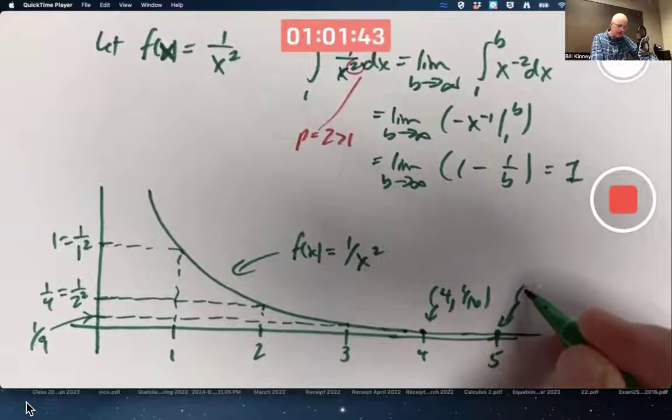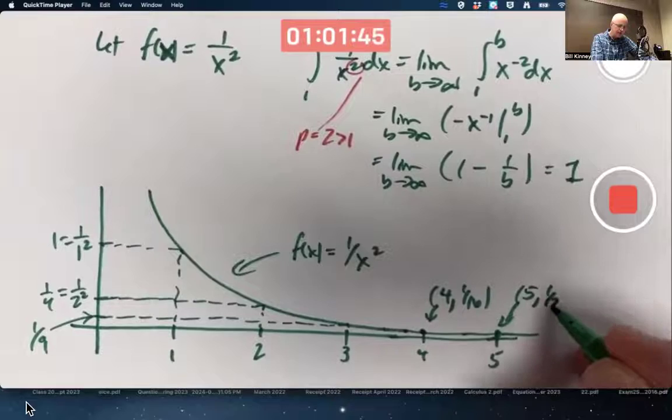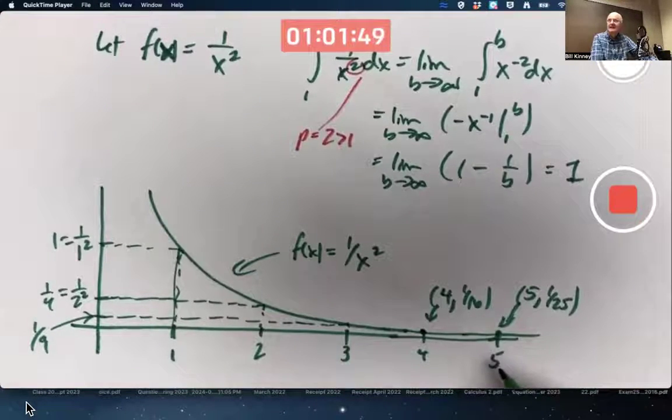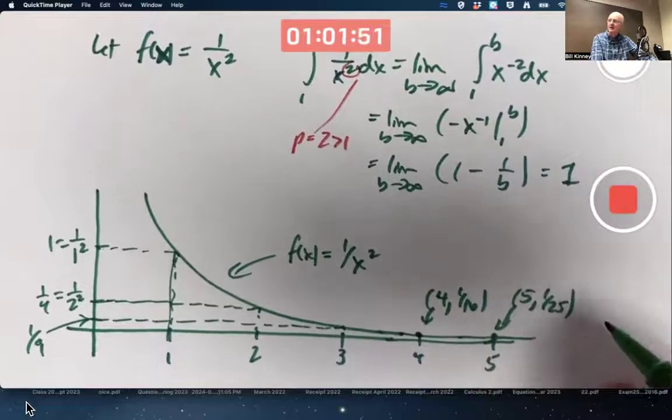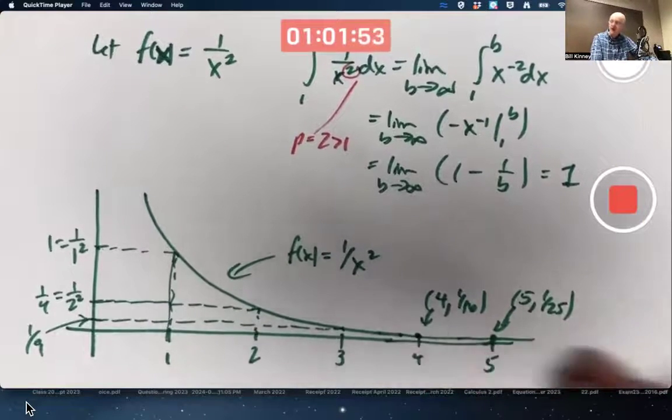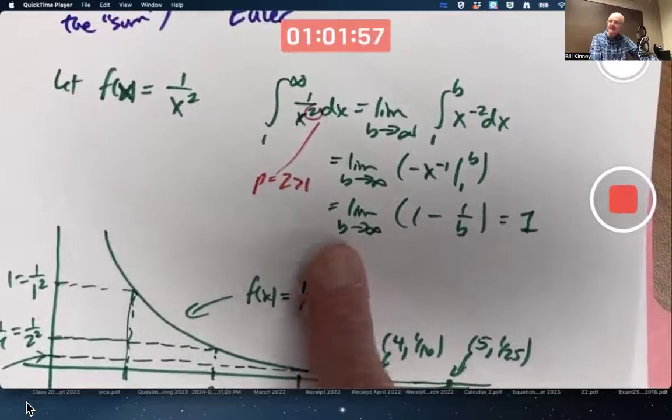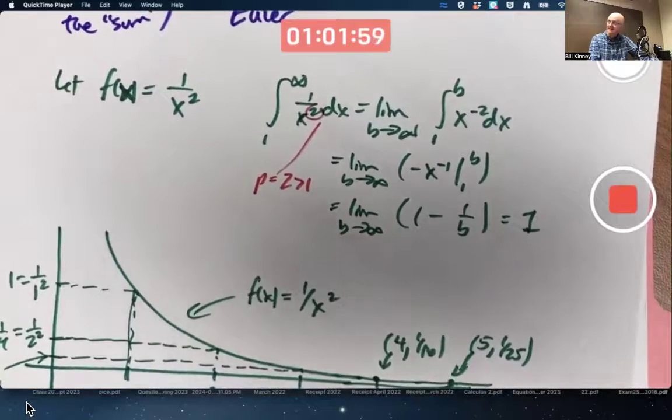We know the improper integral converges, meaning the area under this curve from 1 to infinity exists. It's finite and in fact equals 1, even though the region goes on to the right forever and ever, because that's how you define what the area is as a limit, and this limit does exist.